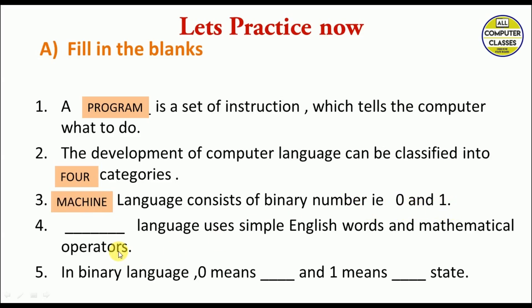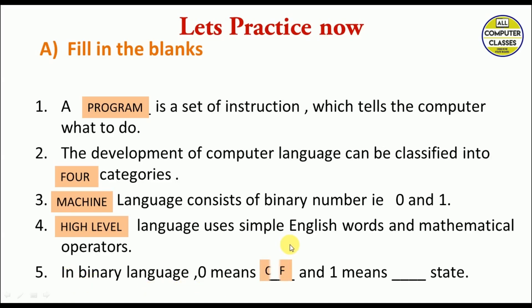Dash language uses simple English words and mathematical operators — the answer is high-level language. The next one is: in binary language, zero means off and one means on. You might have seen on some switches where zero is written on one side and one on the other side.